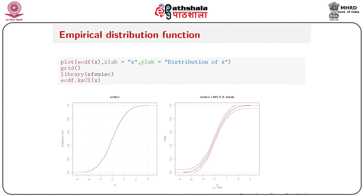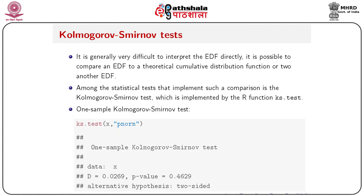Using ecdf.ksci from the library SfSMisc, first install and load the library, then pass x to the function. It automatically generates the CDF along with a 95% confidence interval — the Kolmogorov-Smirnov band. Three plots are produced: the middle one is the estimated distribution function, and the two red lines indicate the 95% confidence interval band.